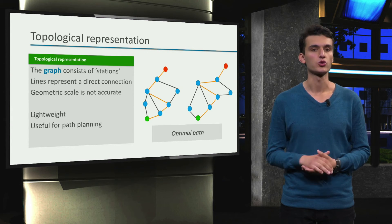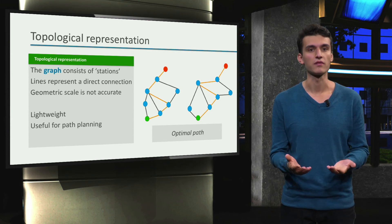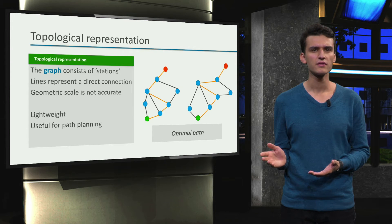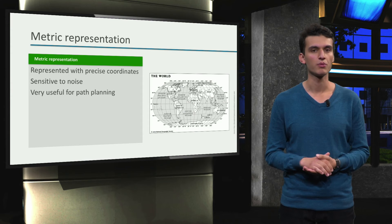This representation seems very useful. But what if I'm not going to take the subway, I'm going to drive myself? Is this representation enough? Well, in such a case, a metric representation will be more useful.